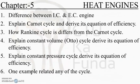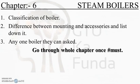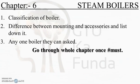The steam boiler chapter covers classification of boilers, the difference between mountings and accessories, and understanding at least one boiler type. This is one of the easiest chapters — they will ask about boiler mountings, accessories, different boilers, and classification. Around seven marks of questions will be asked from this chapter. You can draw the boiler, explain how it works and its components, and get full marks. Go through this chapter once.